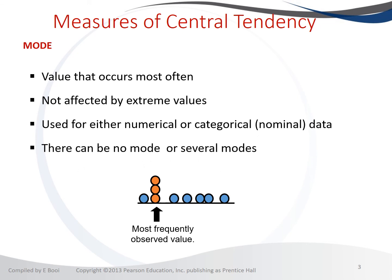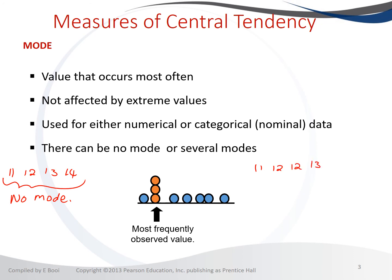With the mode, there can be no mode or several modes. For example, if I have 11, 12, 13, 14 — each appearing once — there is no mode. But if I have 11, 12, 12, 13, 14, then 12 appears twice while all others appear once, so 12 is the mode. Our modal value is 12.